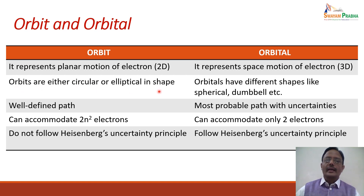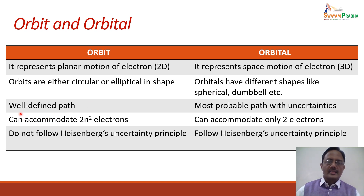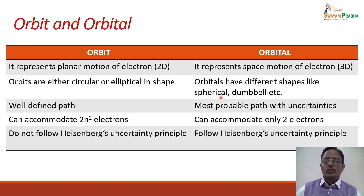Orbits are either circular or elliptical in shape — the electron revolves in a circular or elliptical manner. But orbitals can have different shapes like spherical shape, dumbbell shape, or double-dumbbell shape. The orbit has a well-defined, fixed path, whereas the orbital has no fixed path — the path is uncertain — and what we discuss is the most probable path in case of an orbital.